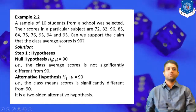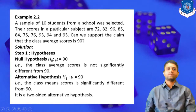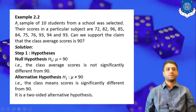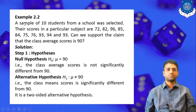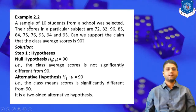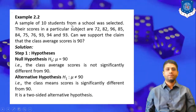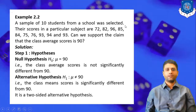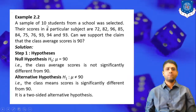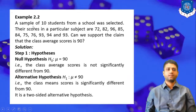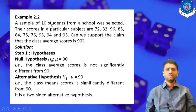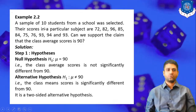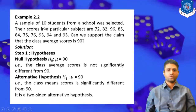We have already seen one example, so this is the second example. The second example suggests that a sample of 10 students from a school was selected — that is 10 students, which is our first observation.